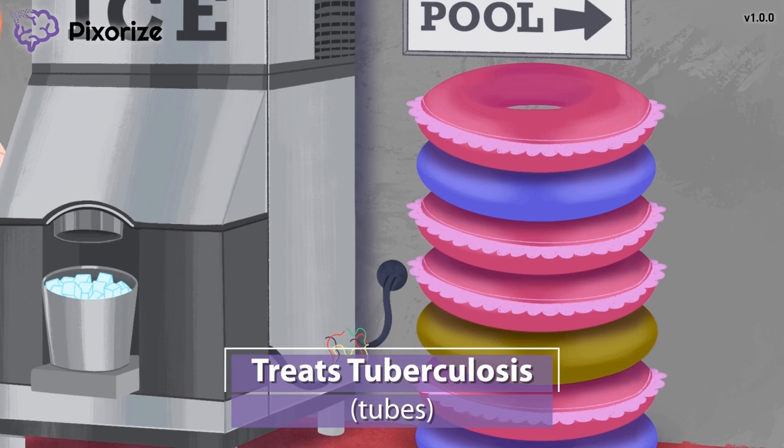Specifically, isoniazid inhibits the synthesis of the mycobacterial cell wall. Isoniazid is usually used in combination with other anti-tubercular drugs, like rifampin, for example. Isoniazid can be used for both active and latent TB, as well as prophylactically for people who have been exposed to TB.